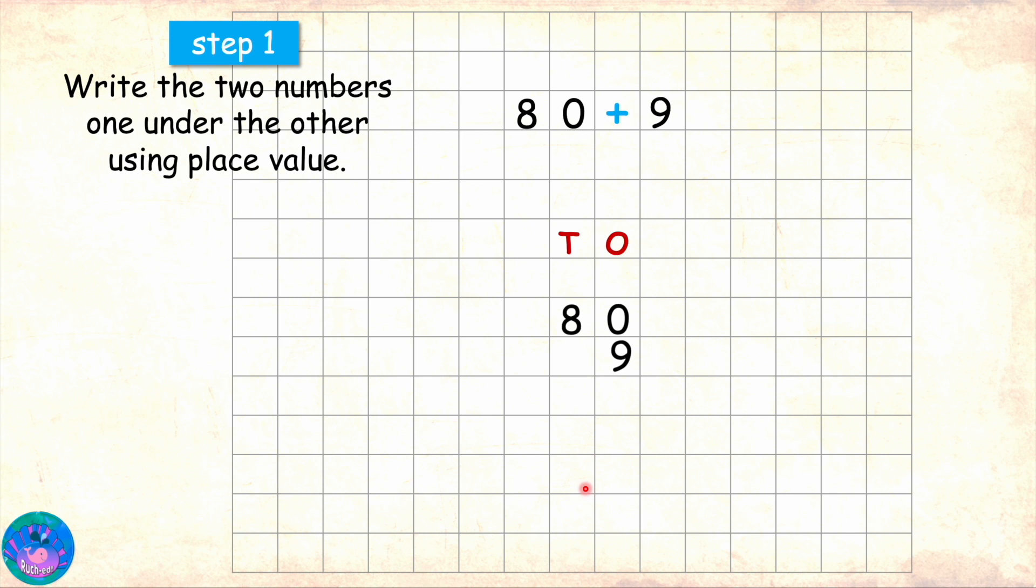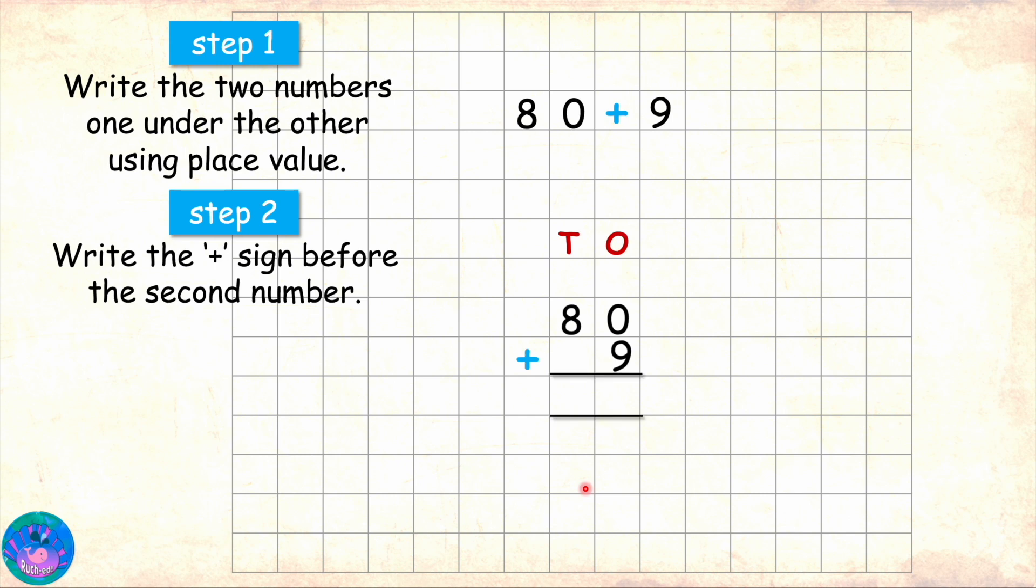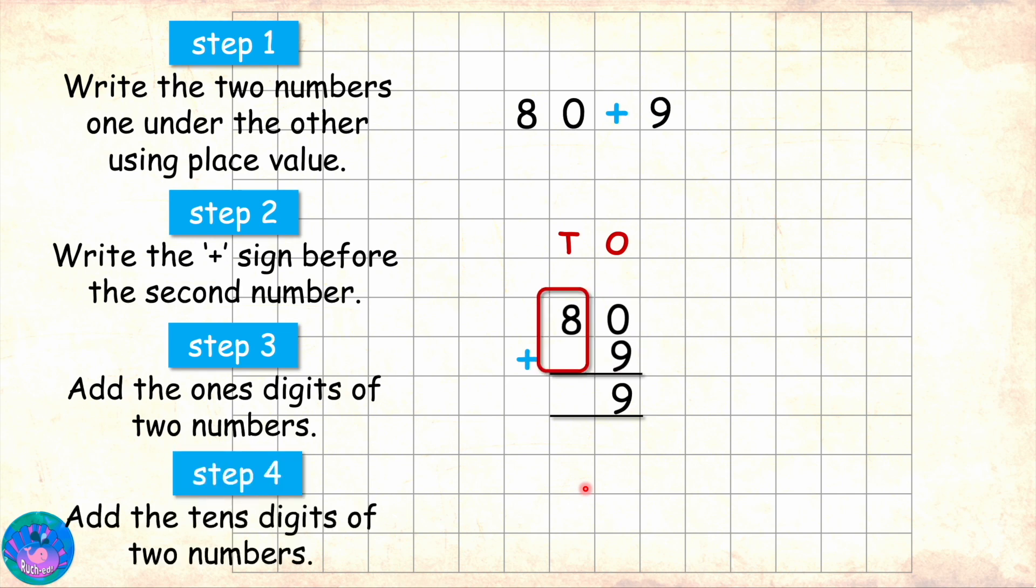Next, I will write the plus symbol before the second number and draw the lines for the answer. Starting with ones, I have 0 and 9. 0 plus 9 is 9. Moving on to tens, I have 8 and nothing. Nothing means 0, so 8 plus nothing would still be 8. So our answer is 89. Excellent, Sam.